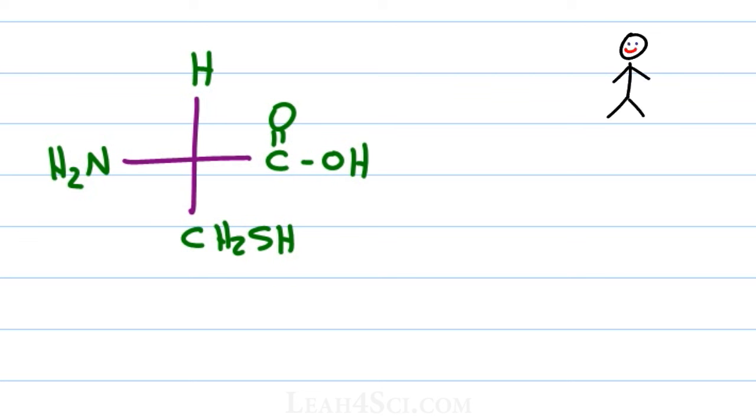Recall that a Fischer projection is a two dimensional method for representing a three dimensional molecule so that you don't have to deal with any dashes or wedges. Here we have an amino acid, bonus points if you can name it in the description, and we want to figure out if it's R/S. If you're not comfortable with reading and understanding Fischer projections, make sure you first watch that series. But Mr. Organic Chemistry here will serve as a quick reminder that a Fischer projection like his bowtie has the right and left coming out and like his spine up and down is going dashes into the page.